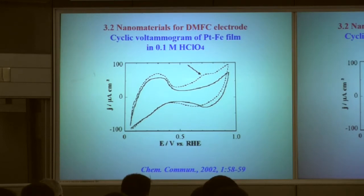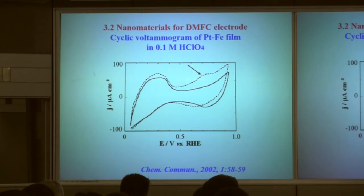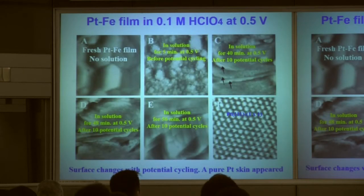Going back to the electrode surface related to the fuel cell: we prepared platinum-based alloy films — for example, a platinum-iron film. We measured the electrochemical performance of this film. In the first cycle there is a slight peak, but after the second cycle the cyclic voltammogram becomes very stable with no additional peaks. This corresponds to different electrochemical processes.